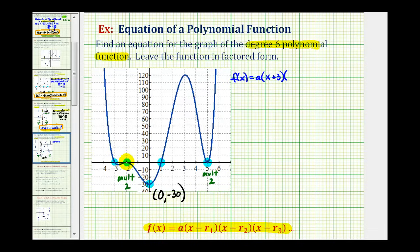The next zero is negative two, so we'd have a factor of x + 2. But because the multiplicity is two, we need two factors of x + 2, or the quantity (x + 2)².